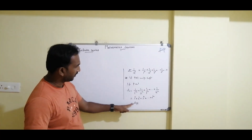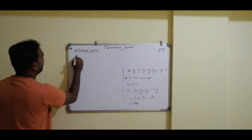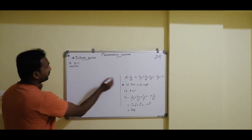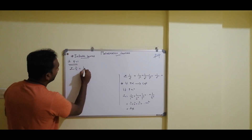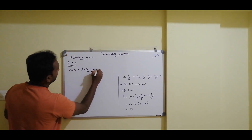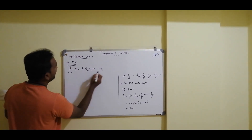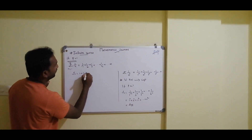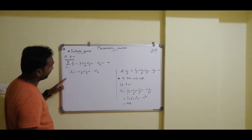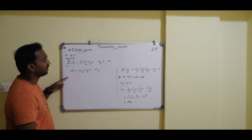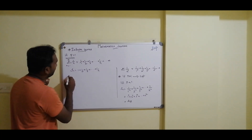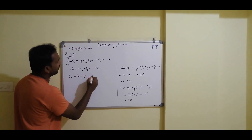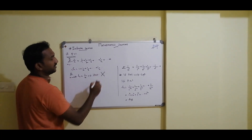So Sn is divergent when p is less than 1. Now, suppose p is equal to 1. This is both a trivial and tricky case. Substituting, we get Σ(1/n) = 1/1 + 1/2 + 1/3 + ... + 1/n. Taking limit n→∞, the nth term 1/n → 0, which is finite. But does that mean the series is convergent? Actually, no — we will prove this now.